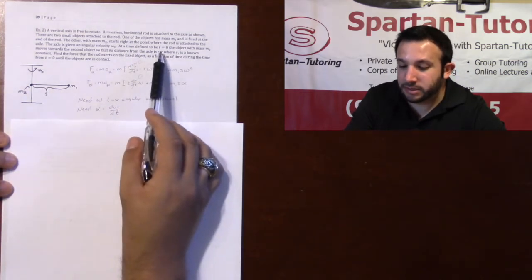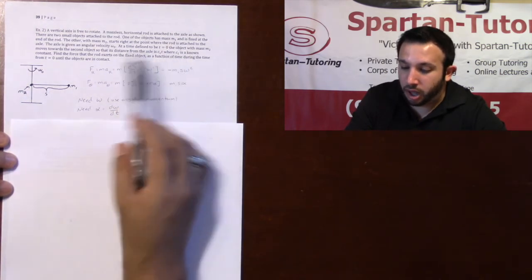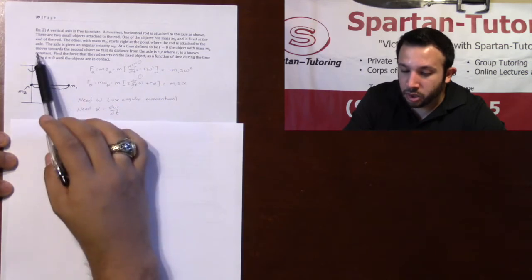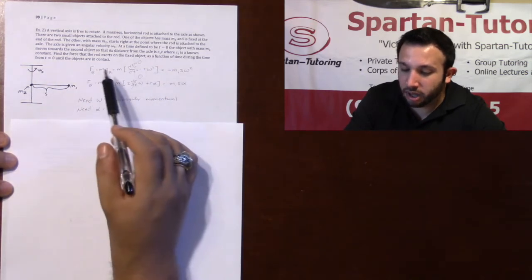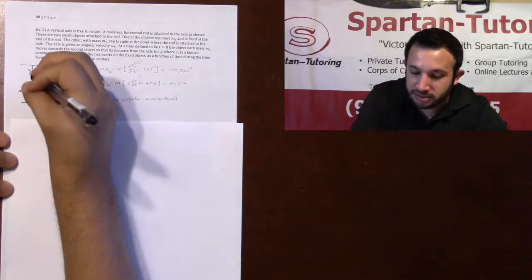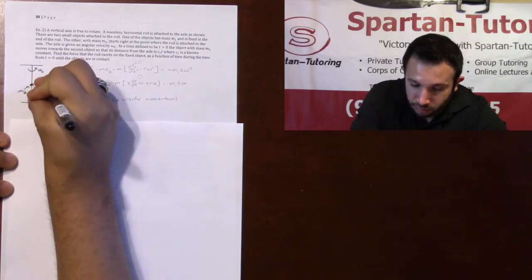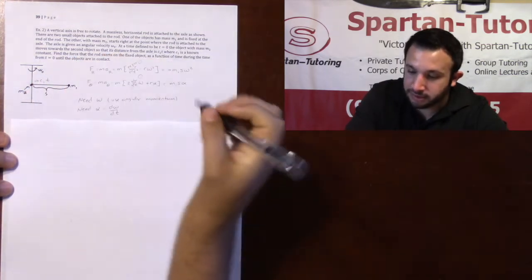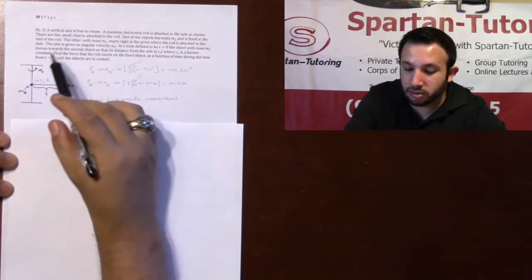At a time defined to be t equals 0, the object with a mass m2 moves towards the second object so that the distance from the axle is c1t. So this is moving with some c1t, where c1 is a known constant.